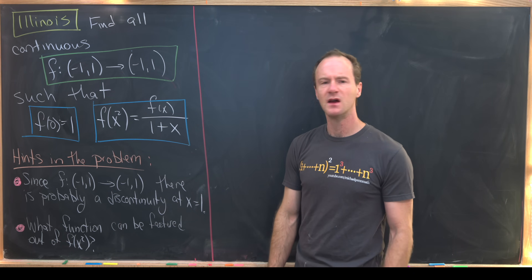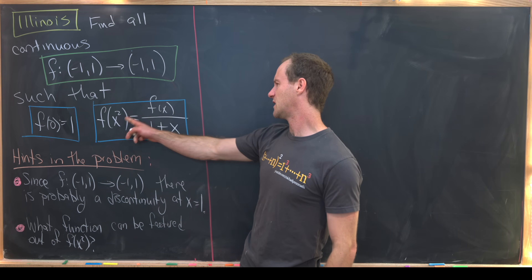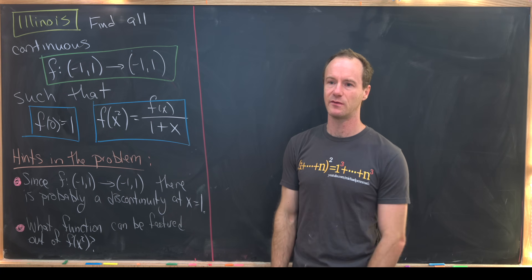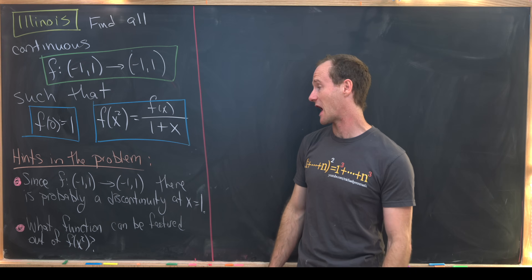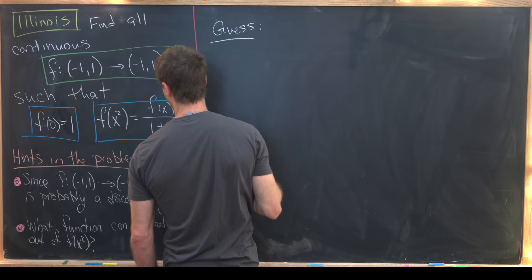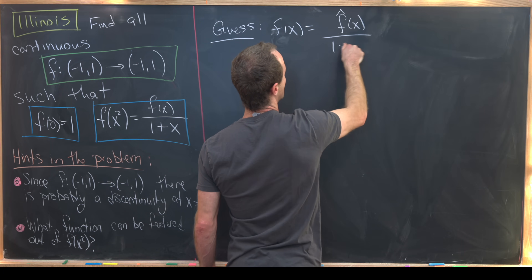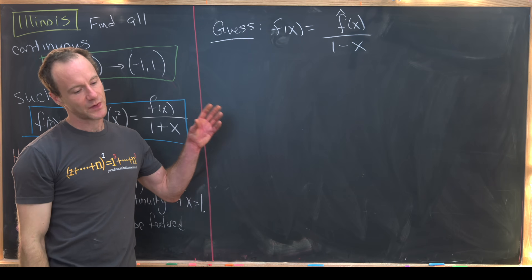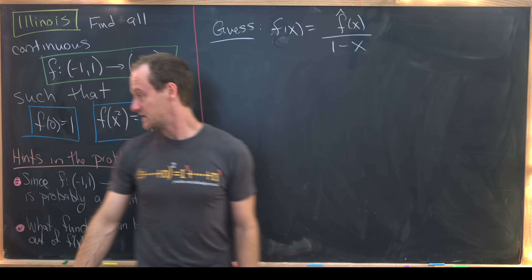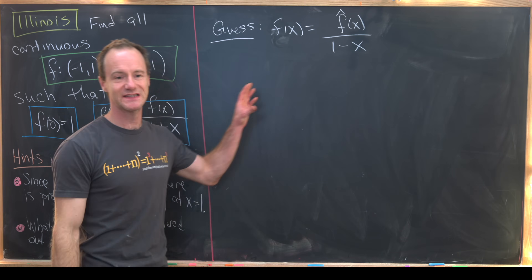Another hint, a little more nebulous, is: what function f can be factored out of its composition with x² pretty easily? That's maybe just a hint to think about after you solve the problem. Let's build off the first hint and try the guess: f(x) = f̂(x) / (1 - x). Since we expect a discontinuity at x = 1 just by the phrasing of the problem, this is a reasonable guess.